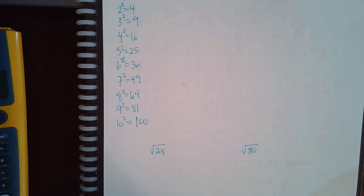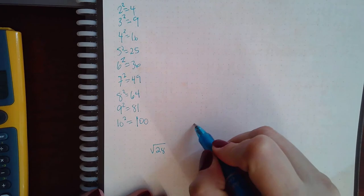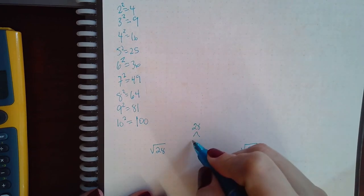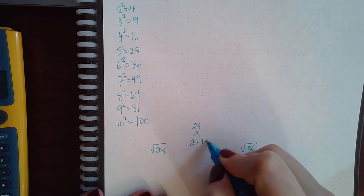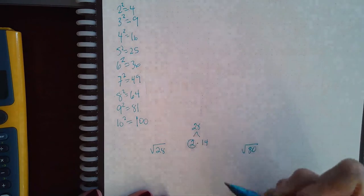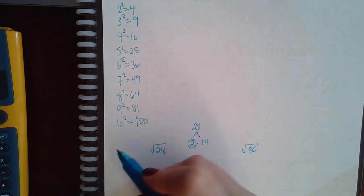Another method we could have done is prime factorization. If I take the number 28 and break it up into two numbers that multiply to give me 28, let's say 2 times 14. This is a prime number, and to do this method you would also need to know what your prime numbers are.